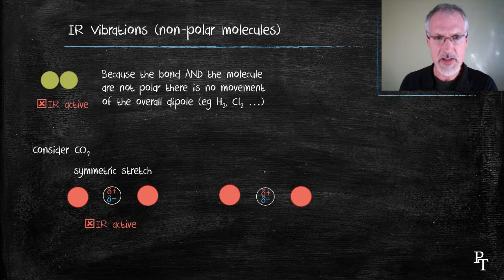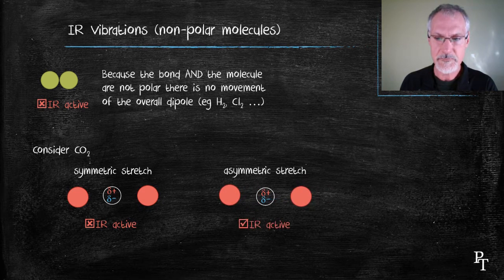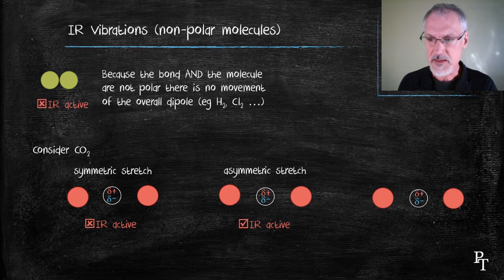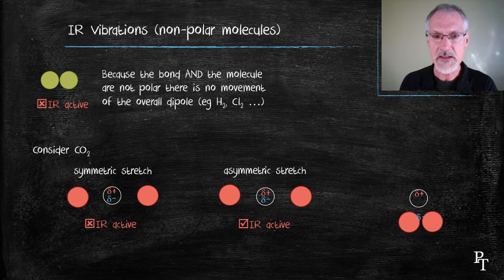If however we get an asymmetric stretch of our oxygens, this does move the negative pole. And this would absorb infrared radiation. And finally, let's look at the bending. And again, we can see a movement of that negative pole. So a bending motion would absorb infrared radiation.